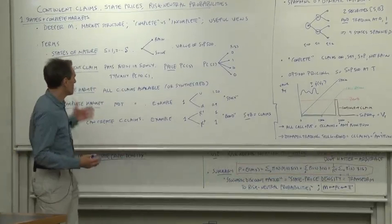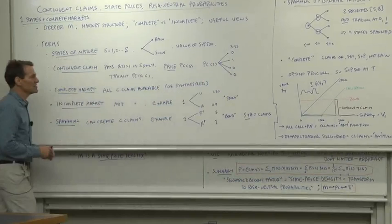A complete market is a market structure where you can buy all possible contingent claims. If there's four states of nature, you can buy consumption delivered in each state of nature individually.